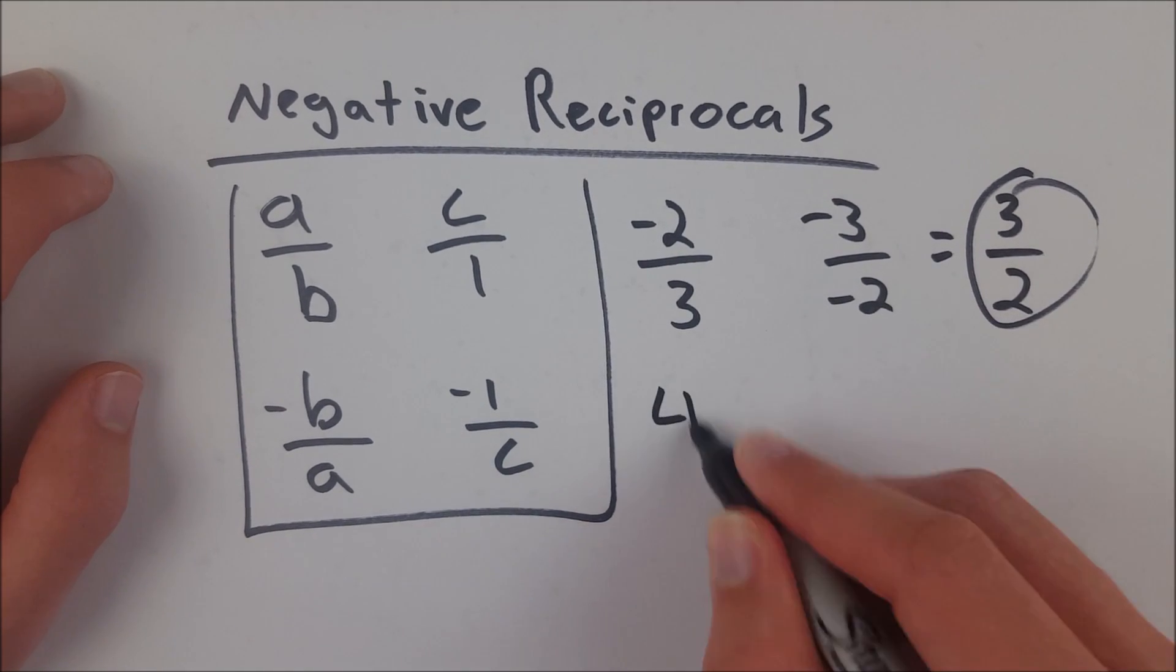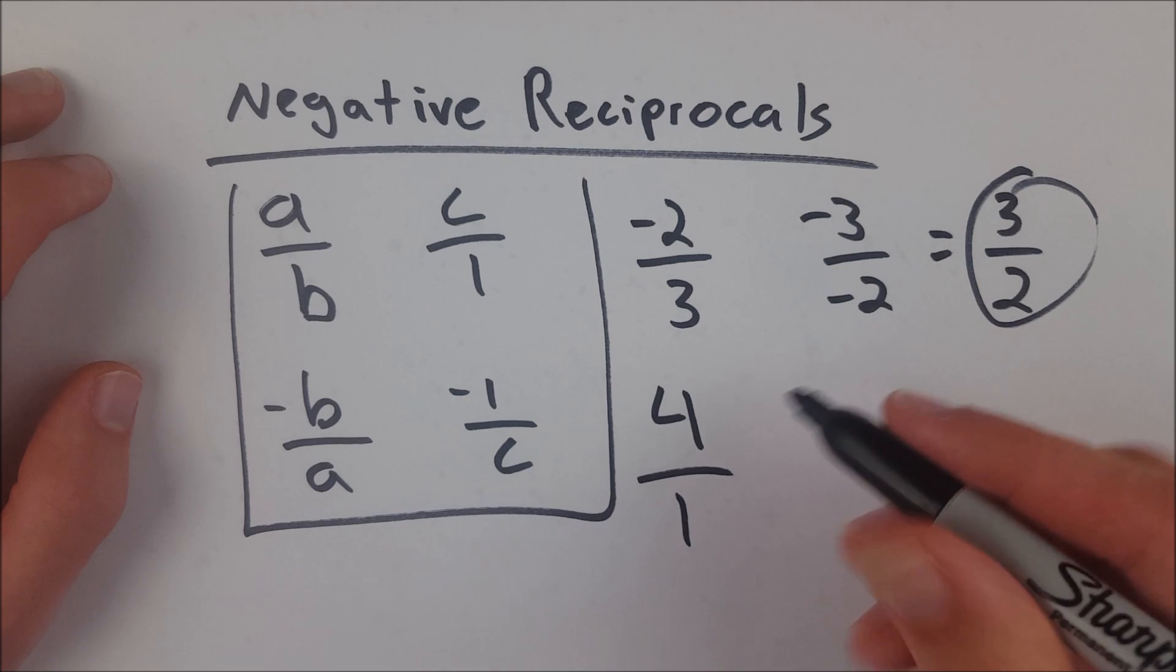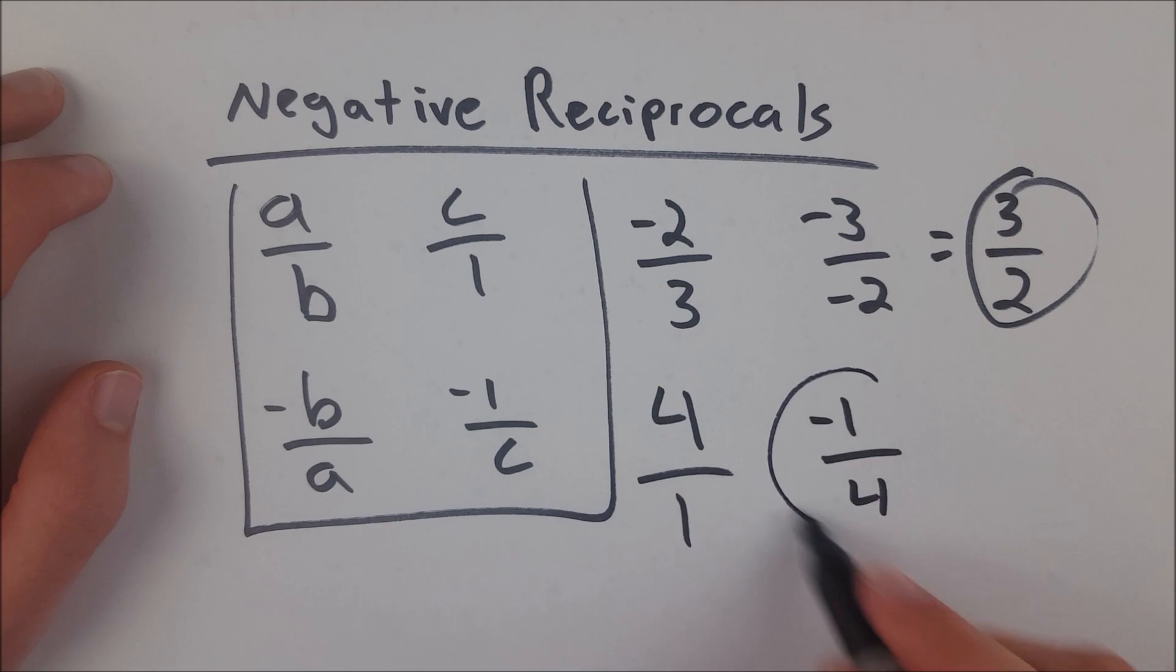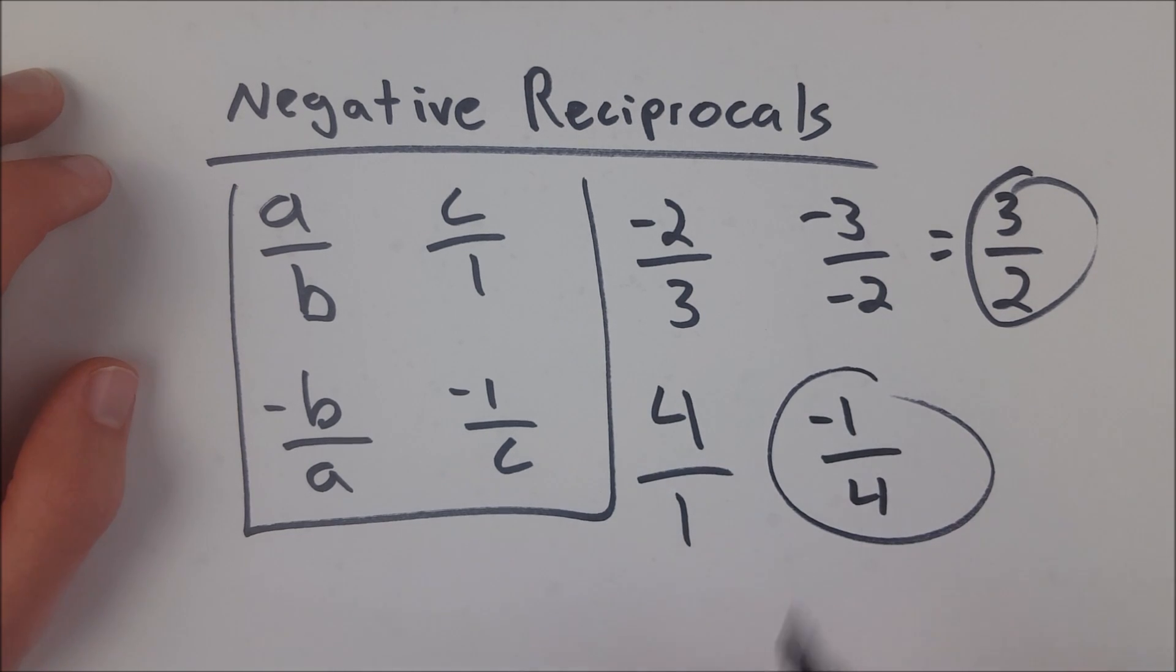If we look at another example, let's look at 4. Well, we'll put that over 1, flip a and b around, so we have 1 over 4, make the numerator negative. Negative 1 fourth is the negative reciprocal of 4 over 1.